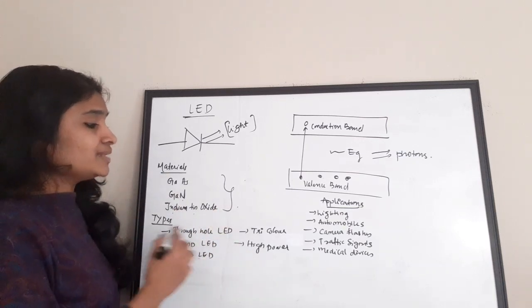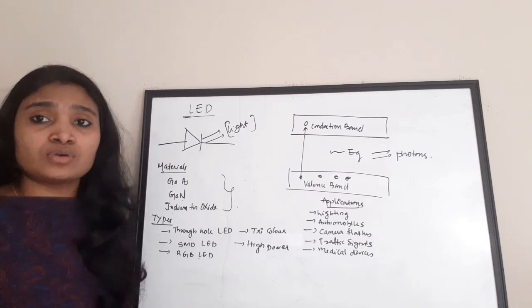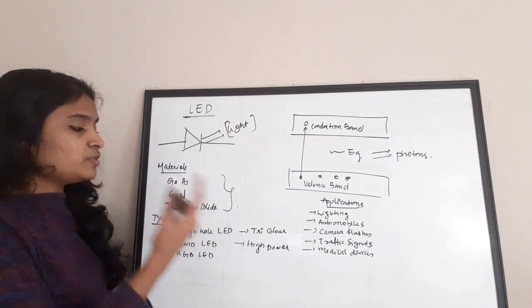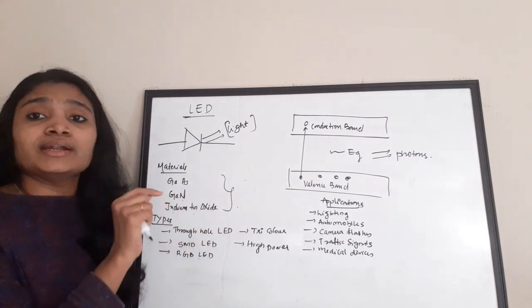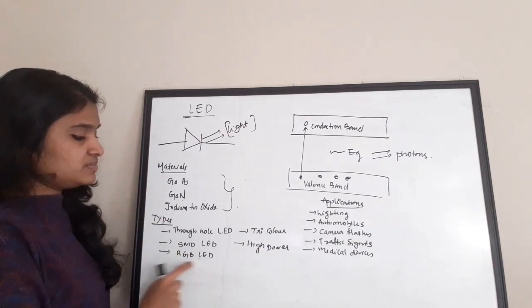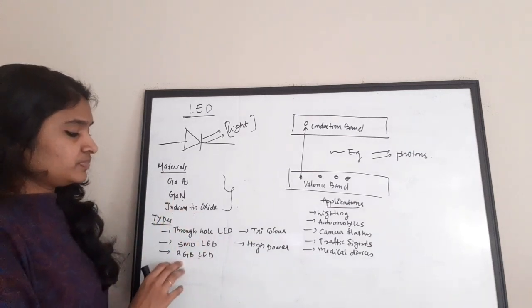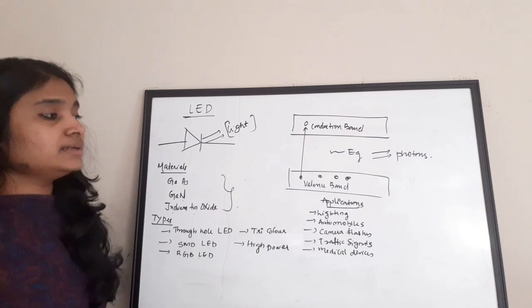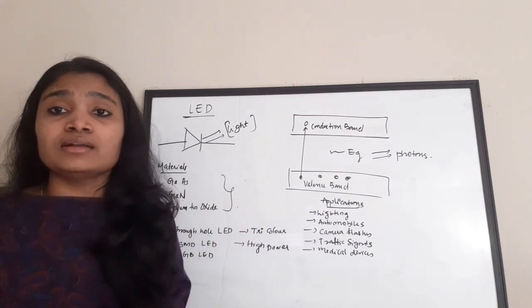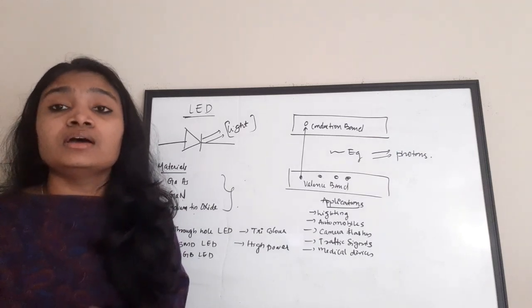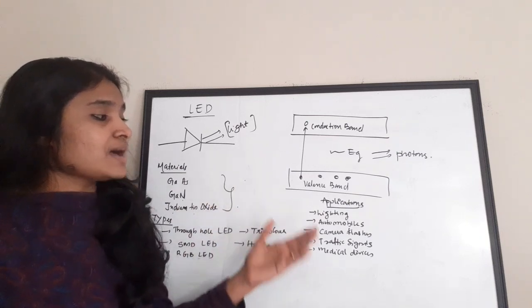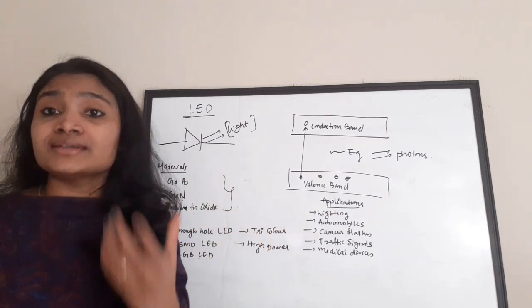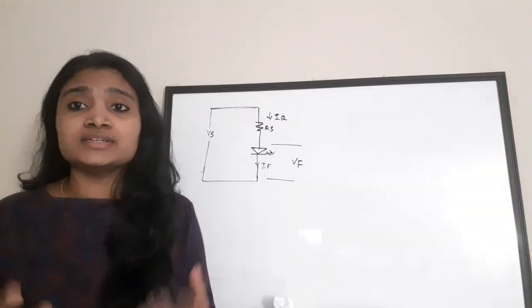There are various types of LEDs. I have done a detailed video on LED and will link that in the description box. Types include through-hole LEDs, SMD LEDs (surface mounted LEDs, which look like a small chip), RGB LEDs which emit red, green, and blue colors, tricolor LEDs, and high-power LEDs. Various applications include lighting in households and offices, automobile lights, camera flashes, traffic signals, and medical devices.